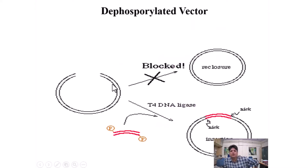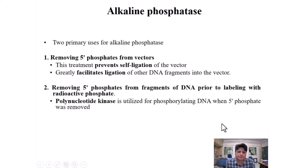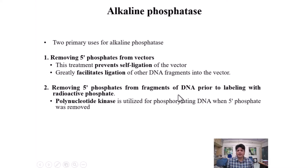When the 5' phosphate is removed from the vector, self-ligation is blocked. The PCR product can still be inserted into the vector through sticky ends. When the 5' phosphate is missing there is a nick — you can fill that nick in vitro by putting it back into PCR, or you can insert the vector directly into bacteria through transformation. The bacterial environment has enzymes which recognize that nick and fill the gap.